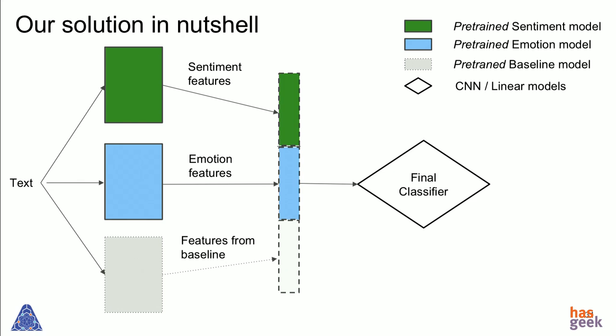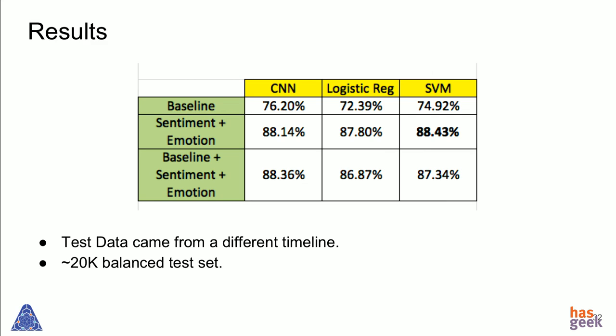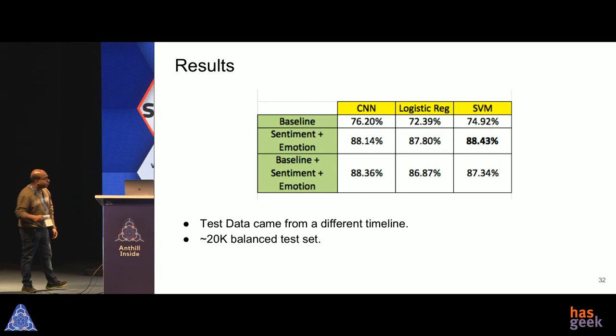Reiterating the key setup: the green box is the CNN for sentiment, the blue box is the CNN for emotion, and we have a baseline. Features from each are combined and fed to a set of classifiers — end-to-end CNN, logistic regression, and SVM. The baseline gave an okay result, but augmenting with sentiment and emotion features showed a substantial increase, and the best we got was close to 88%, which was fairly decent.